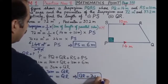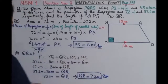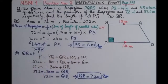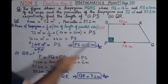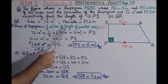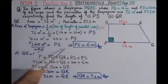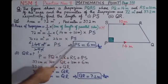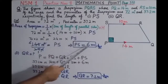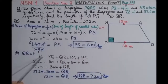So the answer to Part 2 is QR equals 7.2 meters. To summarize: in Part 1 we found the length PS by using the formula — area of trapezium equals half into sum of the lengths of the parallel sides multiplied by height. By substituting the values and calculating, we found the height PS equals 6 meters.